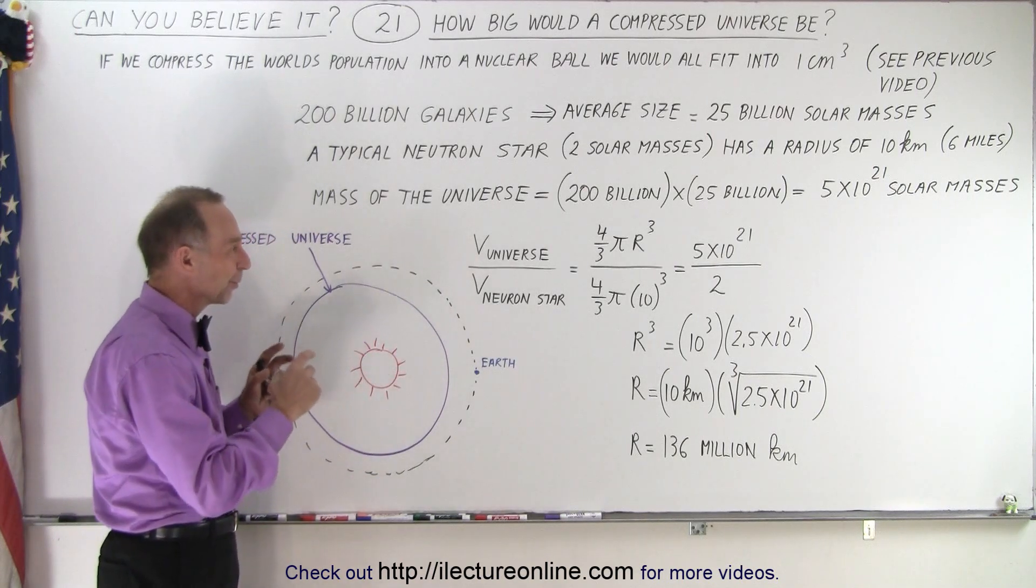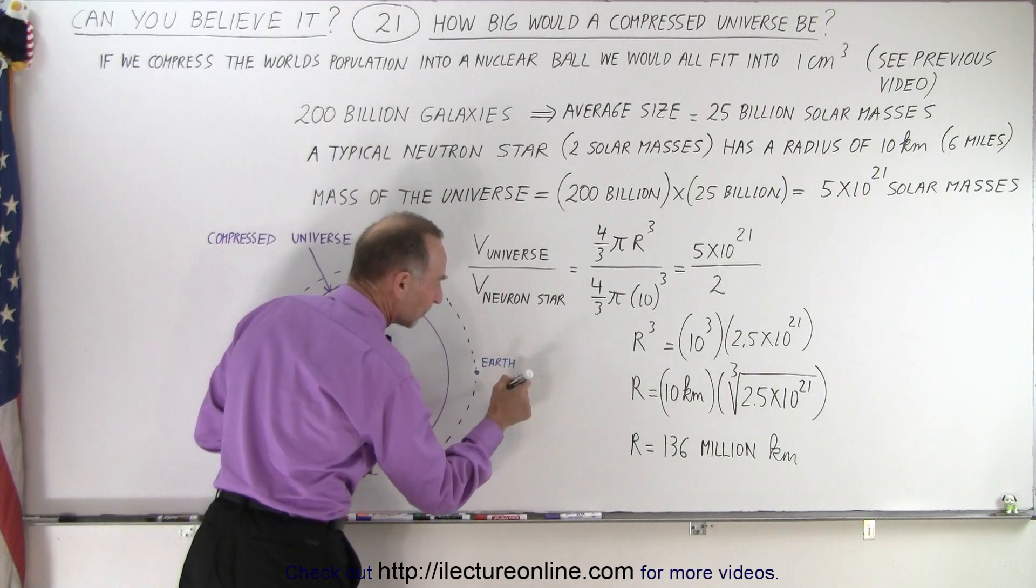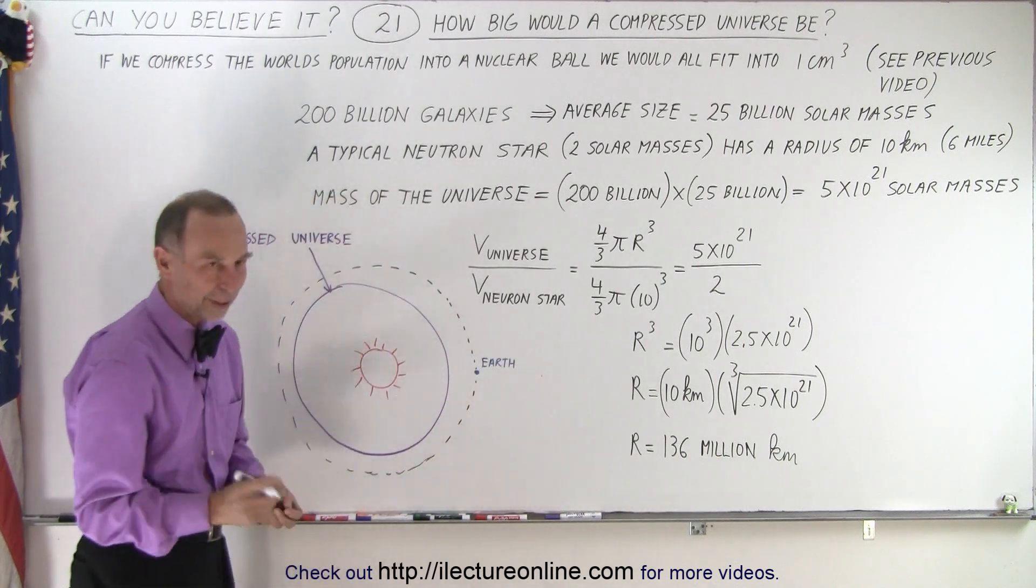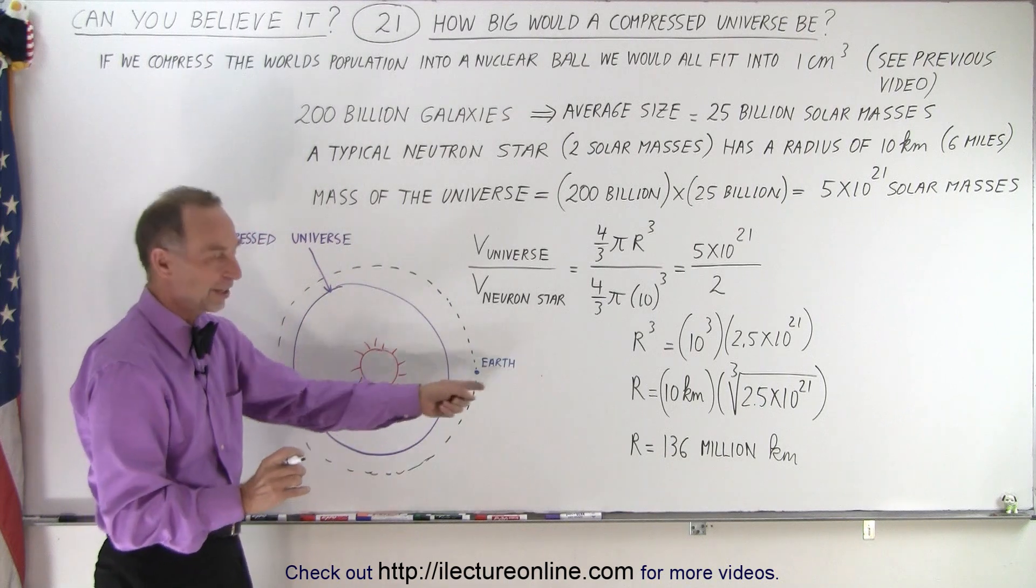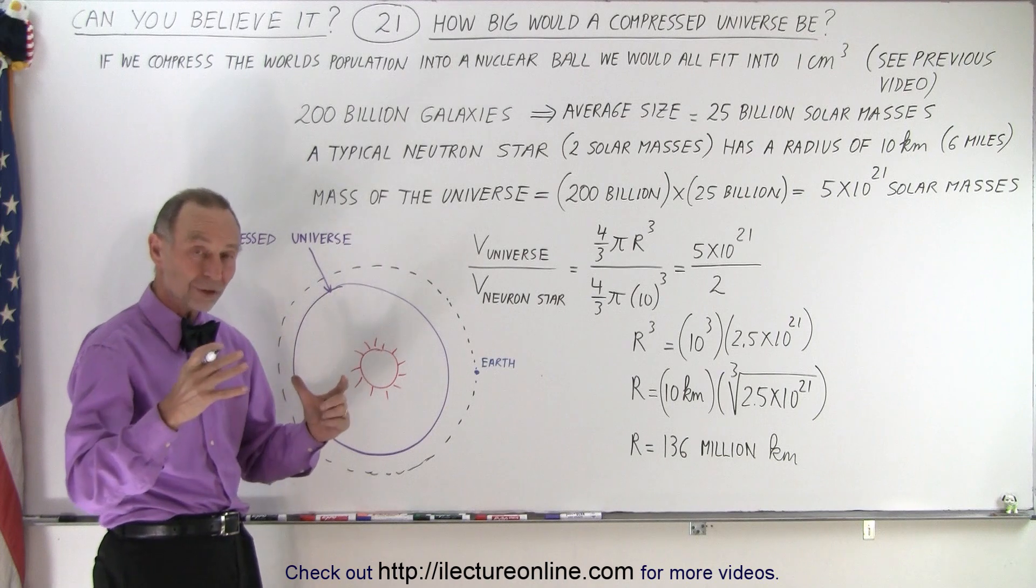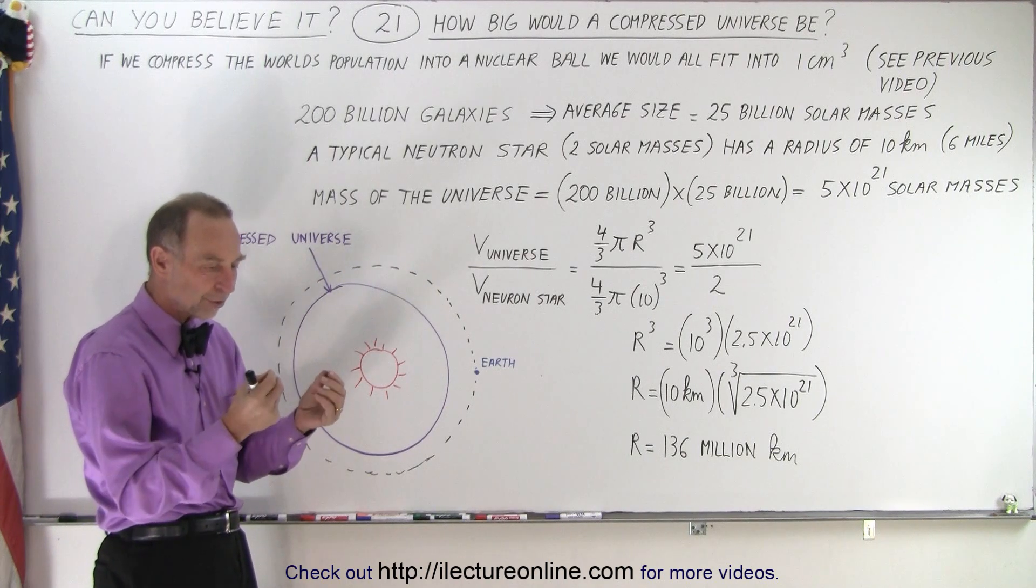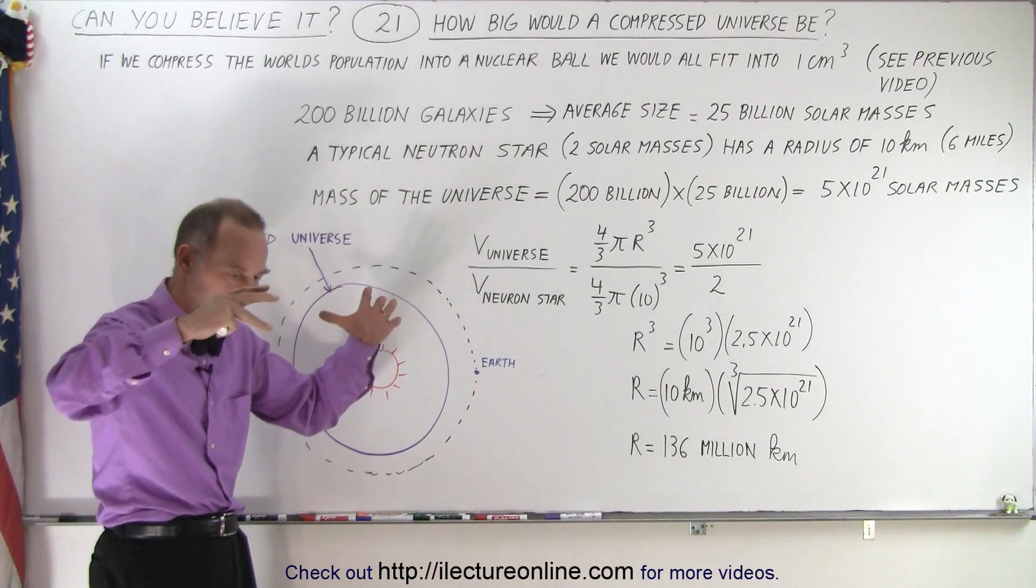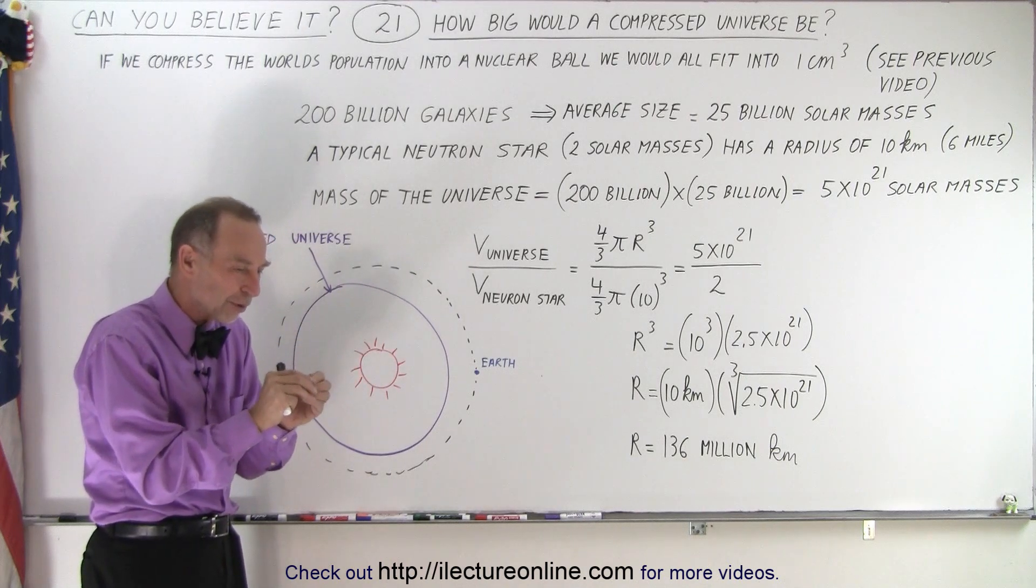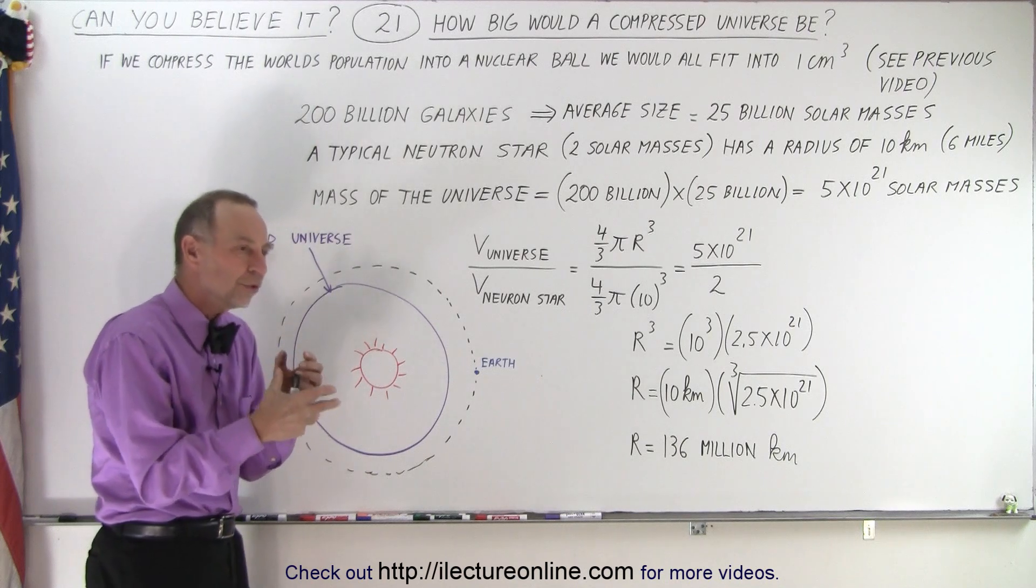When we talk about a neutron star, it would not even be a pinprick on this board relative to the earth. A neutron star is about 20 kilometers across, about 12 miles across, and the density is so enormous that the forces and compression forces at the center of a neutron star are so enormous that it almost is enough to crush neutrons and protons, but we don't think it does.